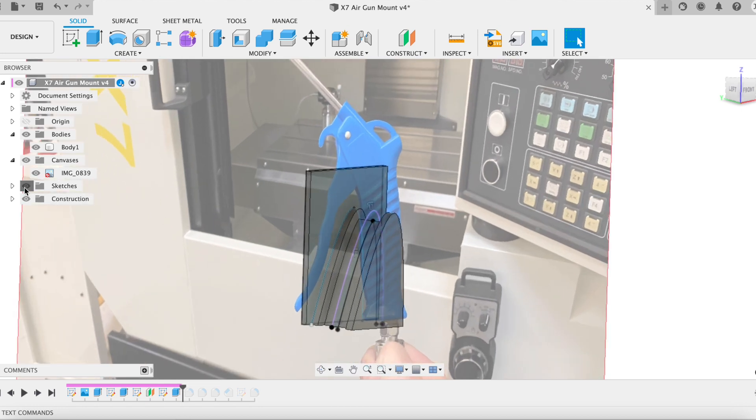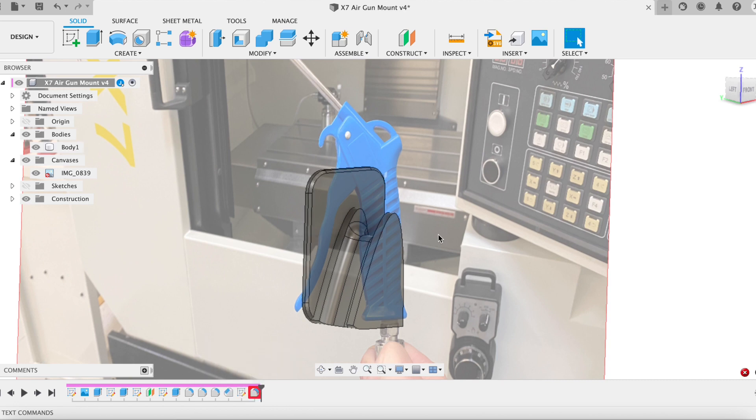You can see I rotated around. When you hide the canvas, it actually becomes solid so you can get a little bit better view. You can see all the fillets and the chamfers and stuff there.